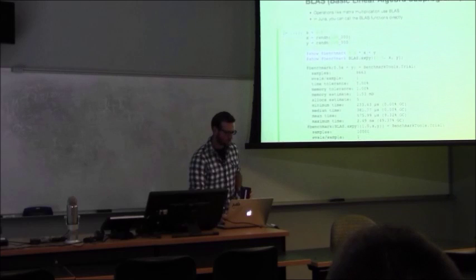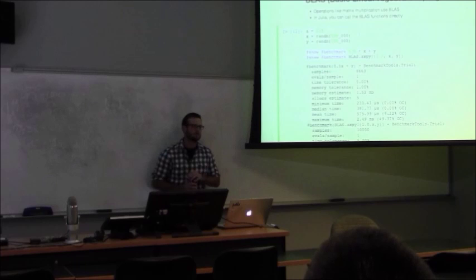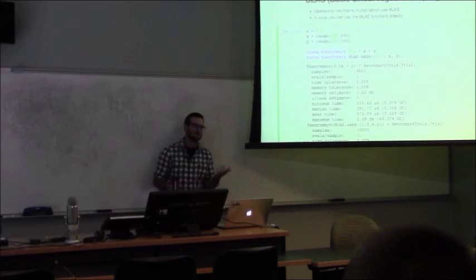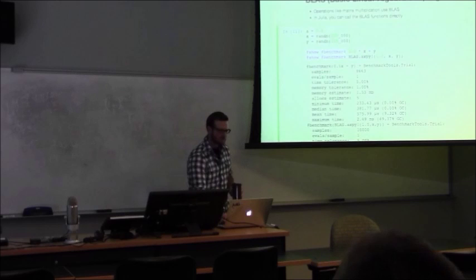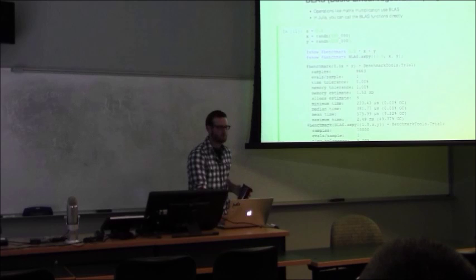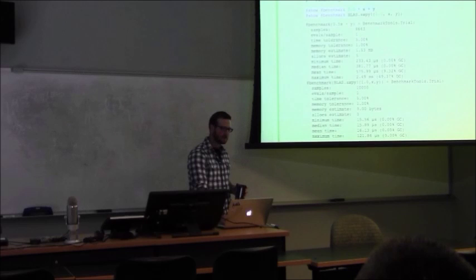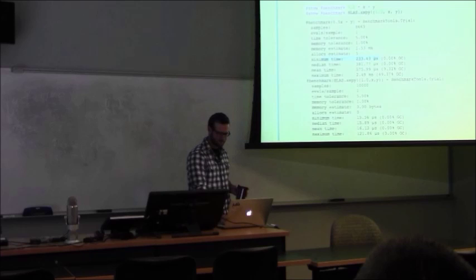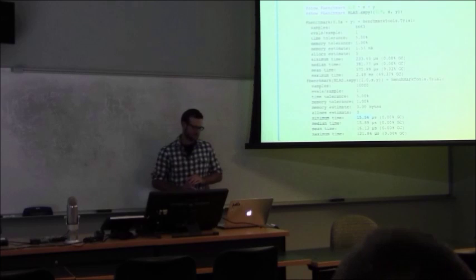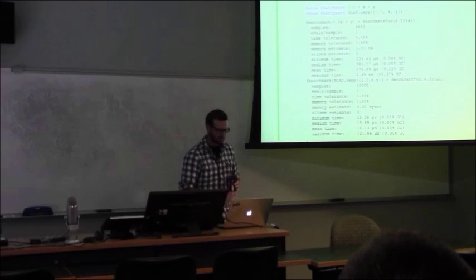Another cool feature in Julia is that you can call BLAS directly. BLAS stands for Basic Linear Algebra Subprograms. In R or Python, if you do a matrix times a vector, it's really just calling BLAS, which is typically Fortran. Here I want to compute A times a vector x plus a vector y — in BLAS this is called AXPY. If I calculate this the normal way versus using the BLAS function AXPY — which overwrites the result into y — the BLAS version is about 15 times faster. You can get very large speedups just by avoiding memory allocation, because the naive version creates a temporary vector 0.5 times x and then adds that temporary to y.